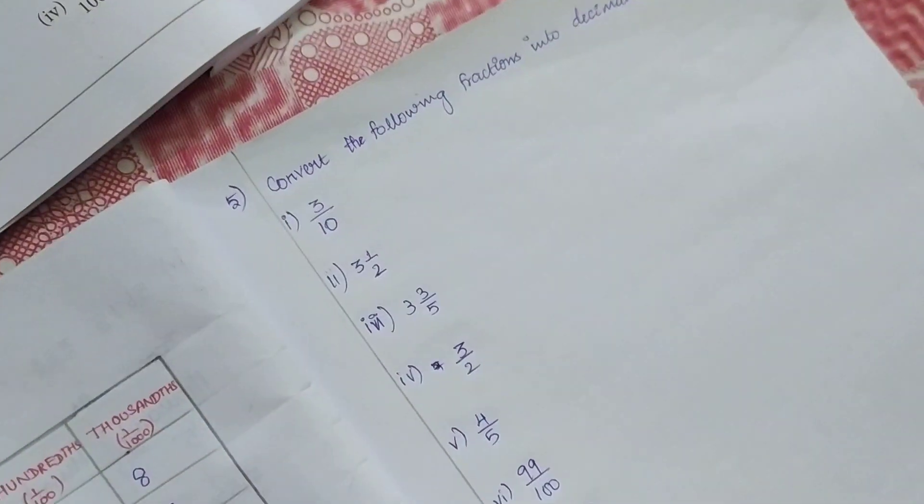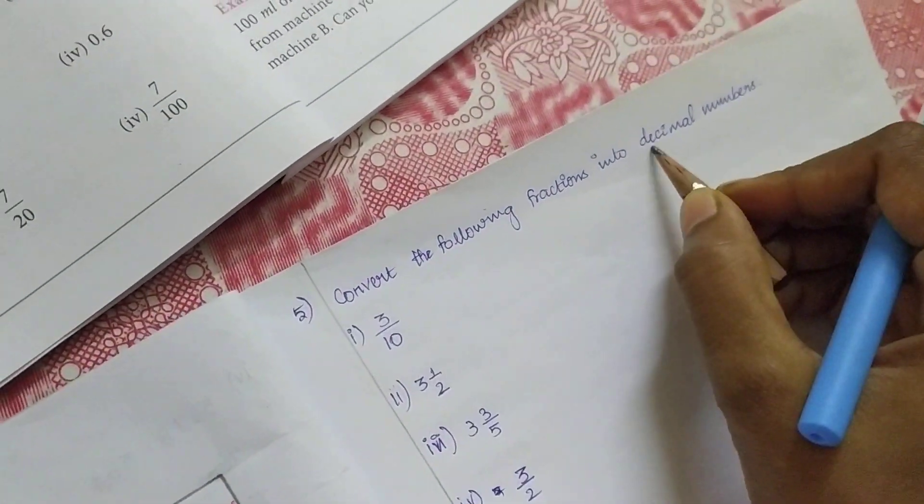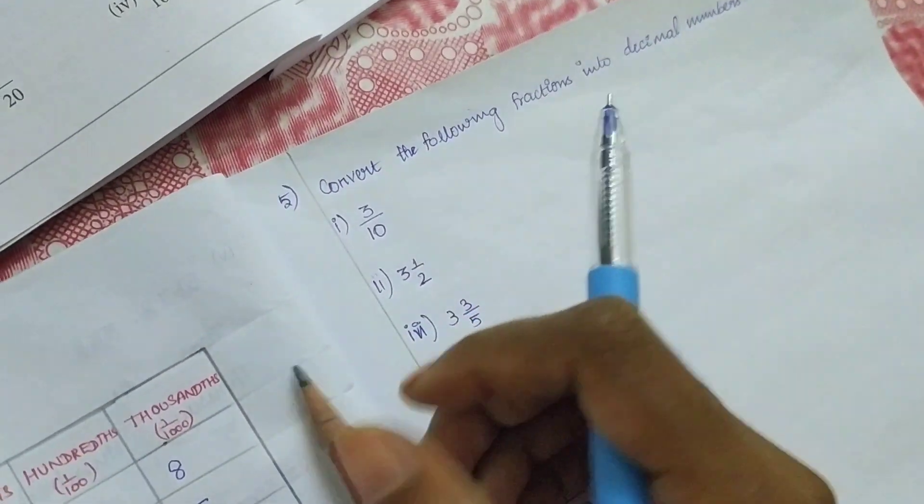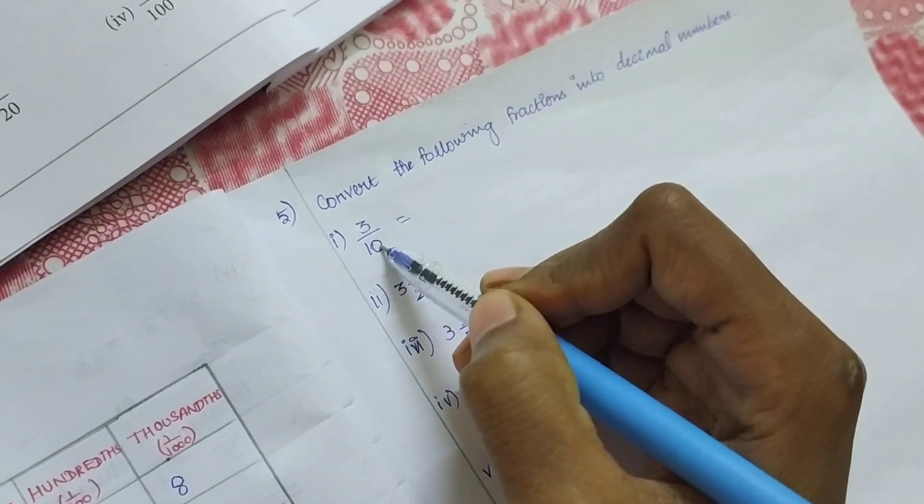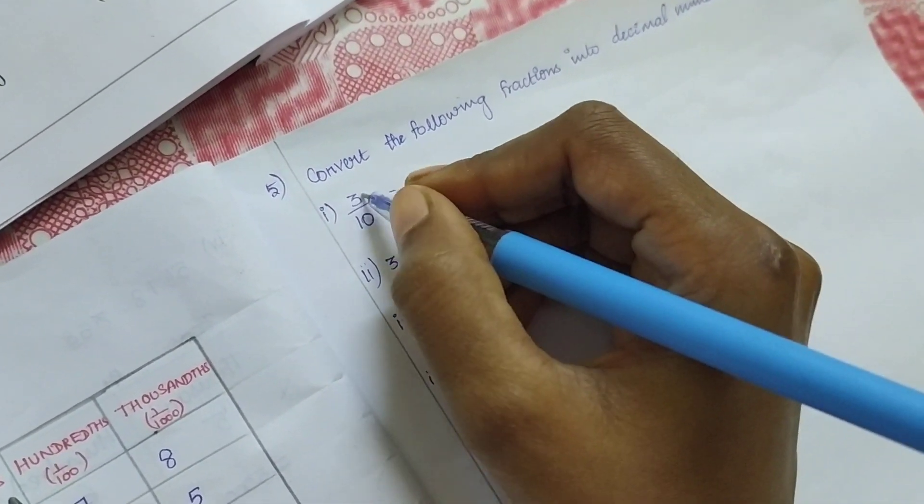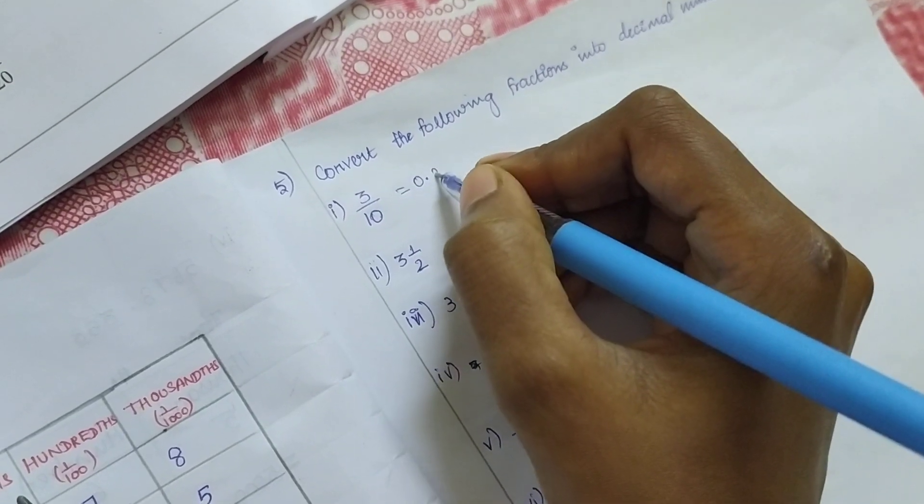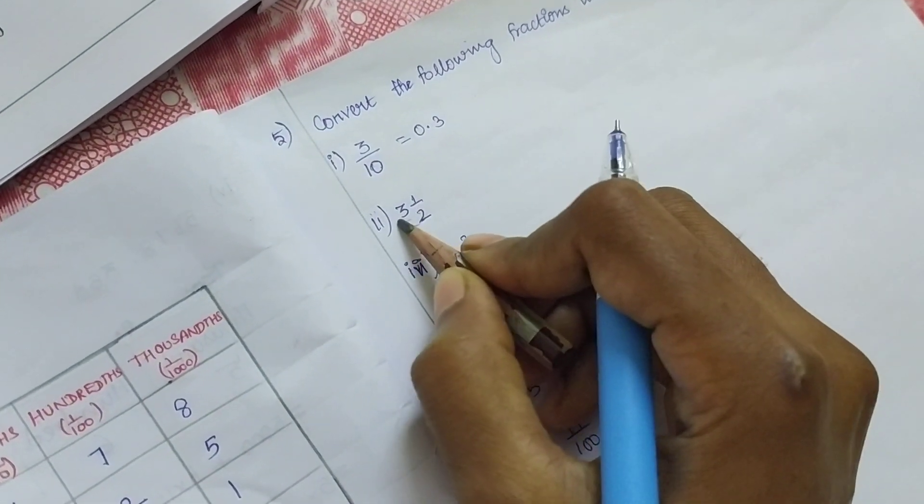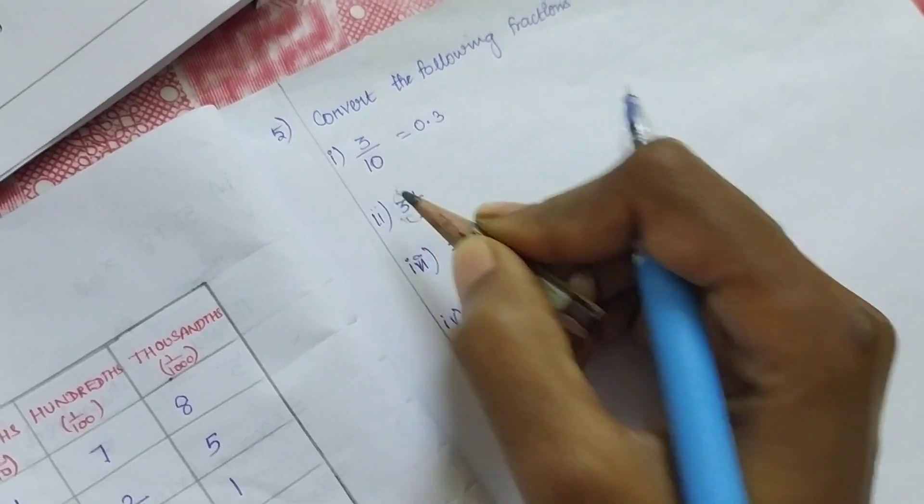Convert the following fraction into decimal. Decimal means zero point something. Division of 10 means one point, so 0.3. This is a mixed fraction: 3 × 2 = 6, 6 + 1 = 7.